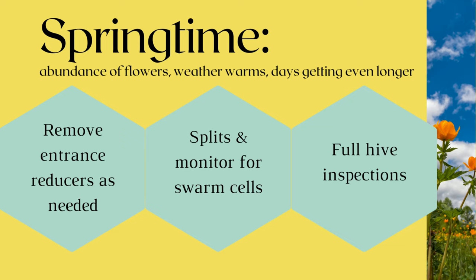You can remove any entrance reducers you've installed, and you may notice that entrances the bees have propolized shut will begin to open up as the bees repurpose that propolis and widen the entrances. This helps to ventilate the hive more and makes it easier for forager bees to get back with food. For first year beekeepers you most likely will not be splitting hives in the spring as you've just started with your colony — however this would be when you'll do it in the next season.